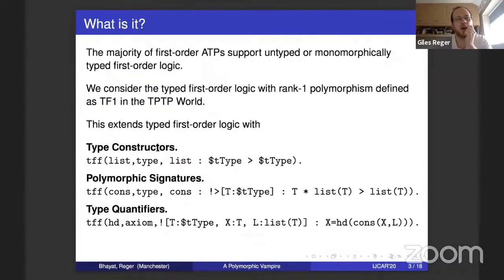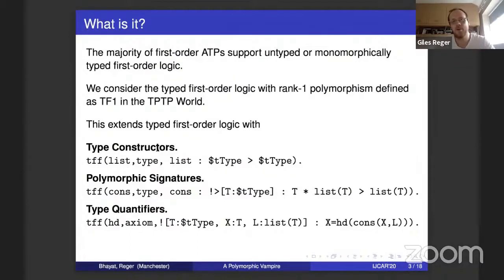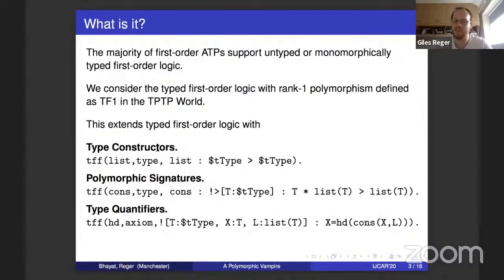I'm going to be talking about our extension of Vampire to polymorphic first-order logic. The majority of ATPs support first-order logic which is either untyped or monomorphically typed, so we thought we'd be a bit different and extend it to polymorphic logic. I'll get to our real reason in a few slides.